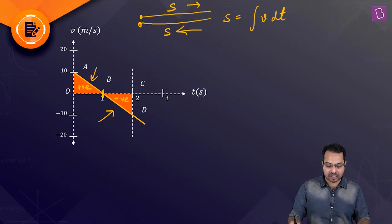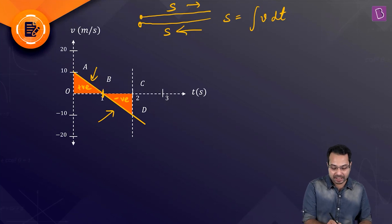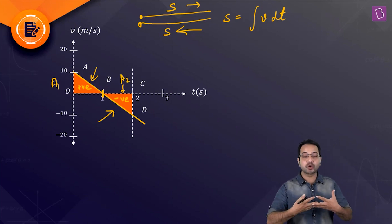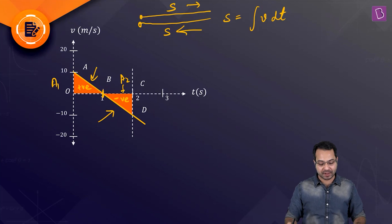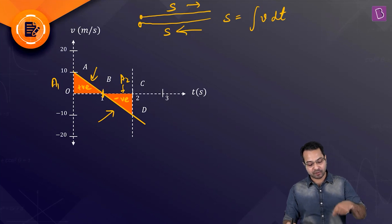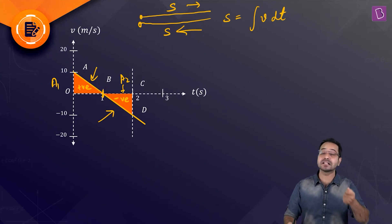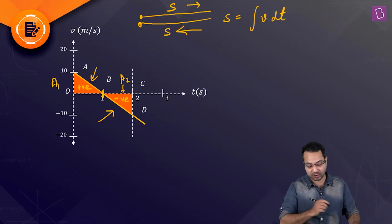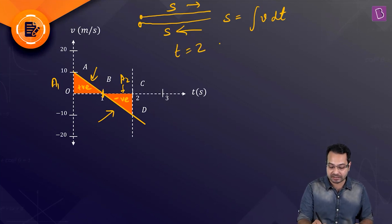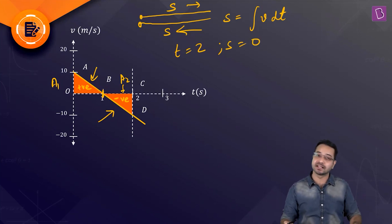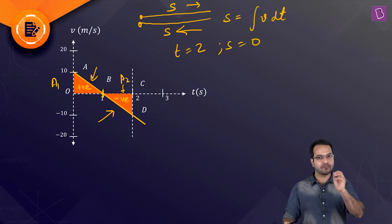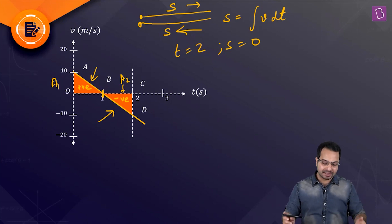Calling the first area A1 and the second area A2, they are equal in magnitude — that is clear from the diagram. From 0 to 1s the particle makes positive displacement; from 1s to 2s it makes equal displacement in the opposite direction, returning to its original position. So at t = 2 seconds the net displacement is zero — the particle has crossed its initial position. One option is already confirmed.